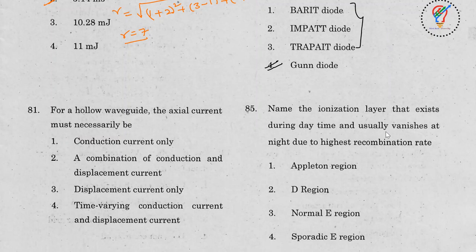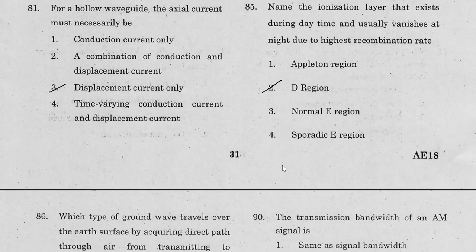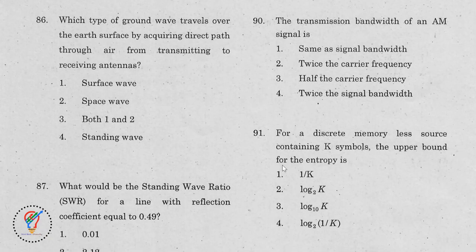Question 81 revisited: For a hollow waveguide, the axial current must necessarily be a displacement current. Question 85: The ionization layer that exists during the daytime and usually vanishes at night due to the highest recombination rate is the D-region. Question 86: The type of ground wave that travels over the earth's surface by acquiring a direct path through the air from transmitter to receiver is a space wave.